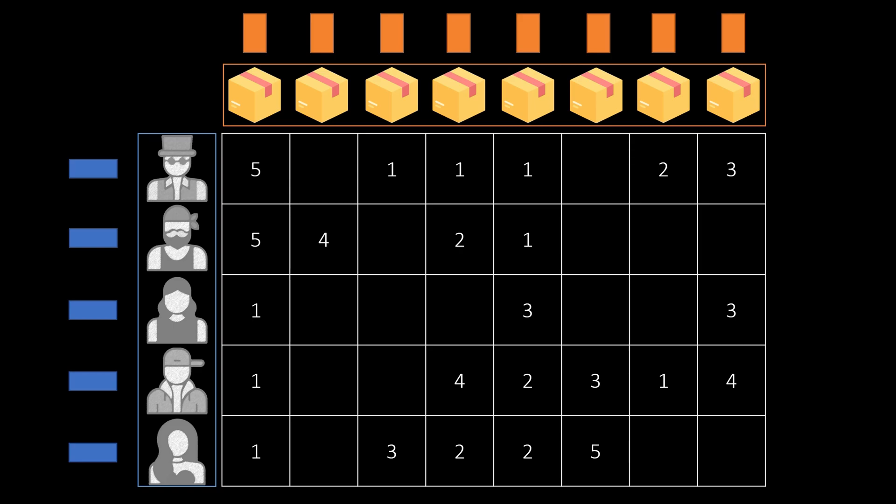So here you can see that every user and item has a bar next to it which represents a learned embedding vector that represents the user or item characteristics. This vector can contain obvious features but also totally uninterpretable values.